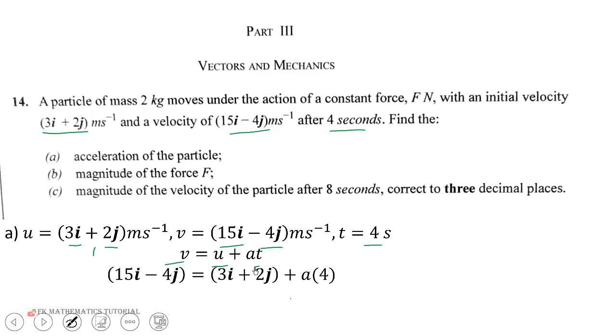Let's move (3i + 2j) to the other side. Expanding: 15i - 4j - 3i - 2j = 4a.